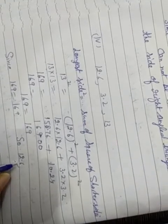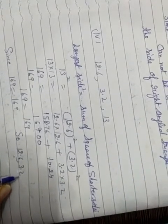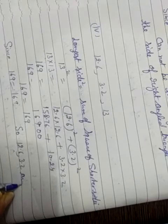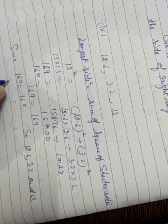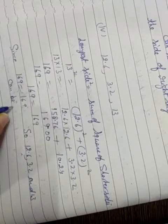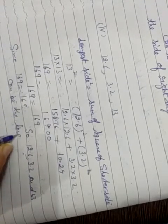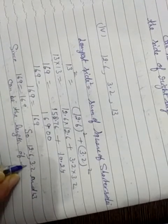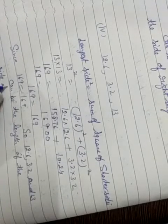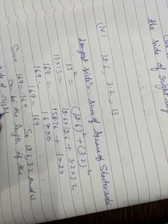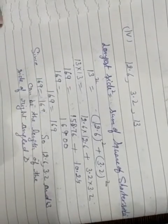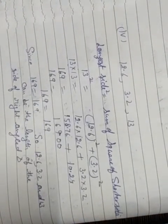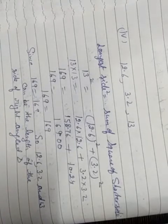12.6, 3.2 and 13 can be the length of the side of a right angled triangle. Clear everyone? Now, your exercise 11D is completed.